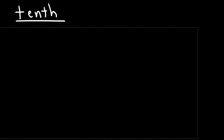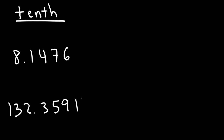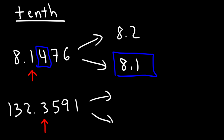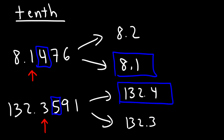Now go ahead and try these two examples: 8.1476 and 132.3591. So let's identify the tenths place. Either we're going to keep it at 8.1 or round it up to 8.2. Looking at the next number — it's four or less, so we're going to round it down to 8.1. For the next example, 3 is in the tenths place — so we're either going to keep it at 132.3 or round it up to 132.4. The next number is a 5, so since it's five or more, we need to round up to 132.4.